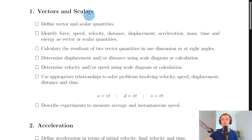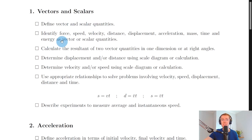Vectors and scalars is our first section. You need to define vector and scalar quantities. A scalar quantity is one that has a magnitude or size only, whereas a vector quantity has both magnitude and a direction. You need to be able to identify force, speed, velocity, distance, displacement, acceleration, mass, time and energy as vector or scalar quantities.